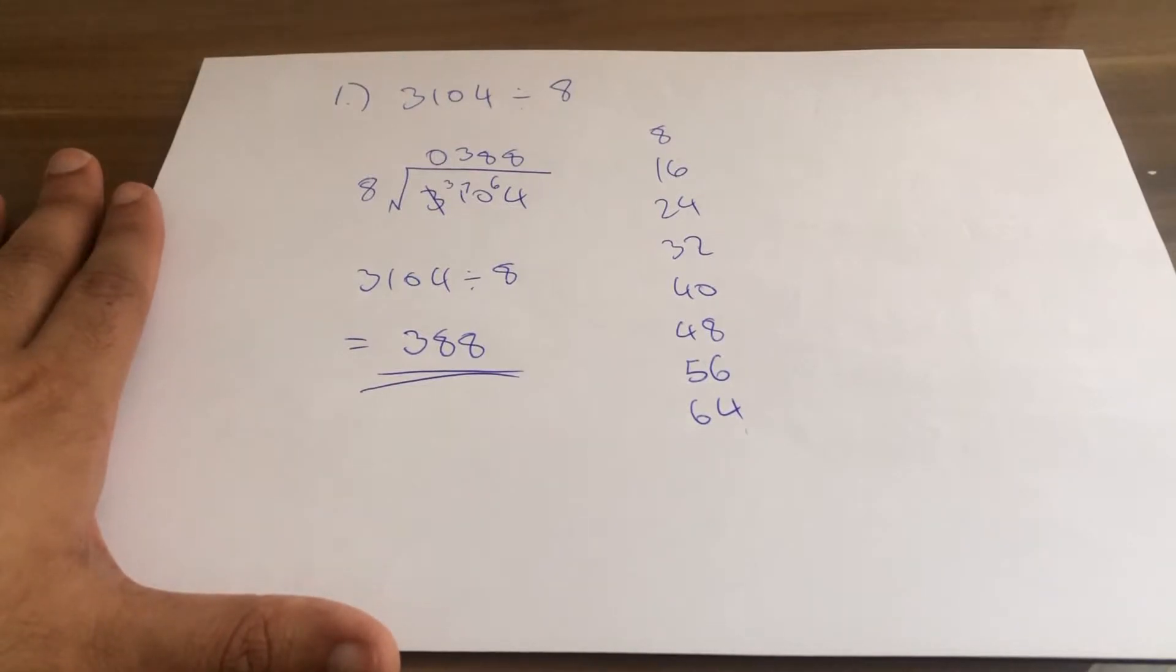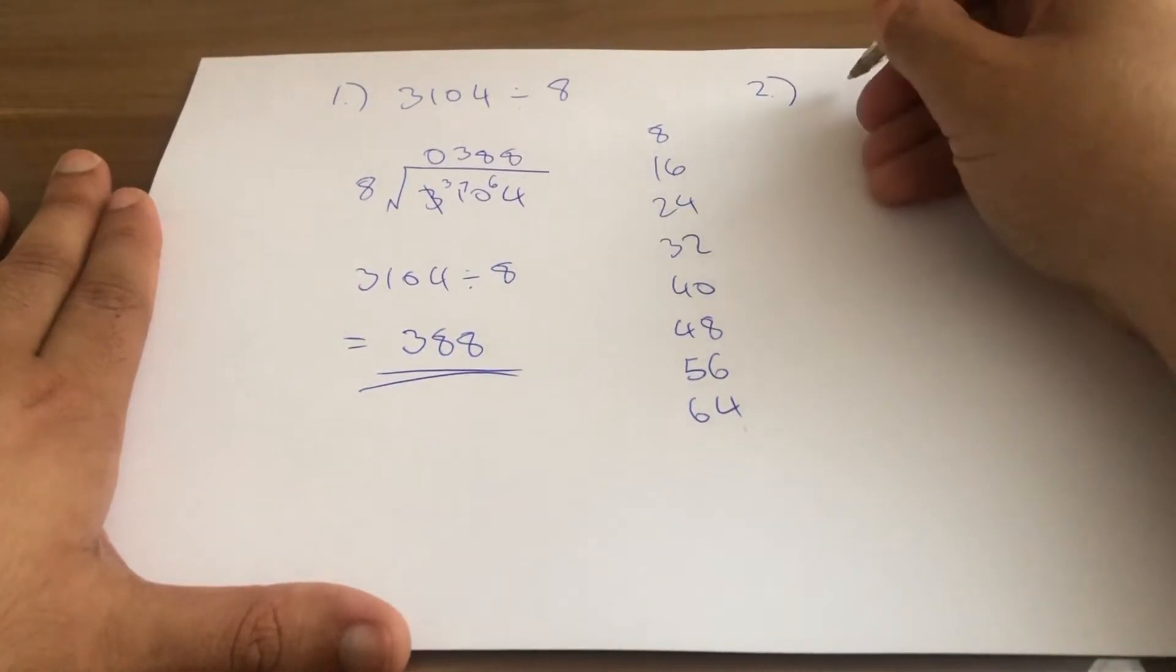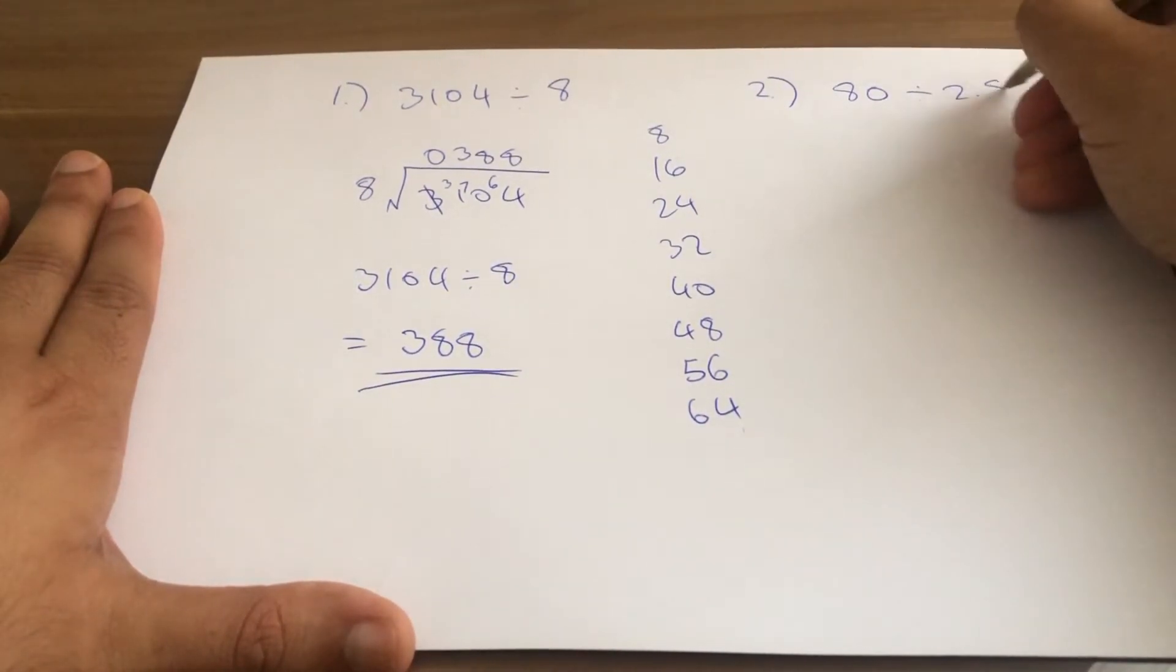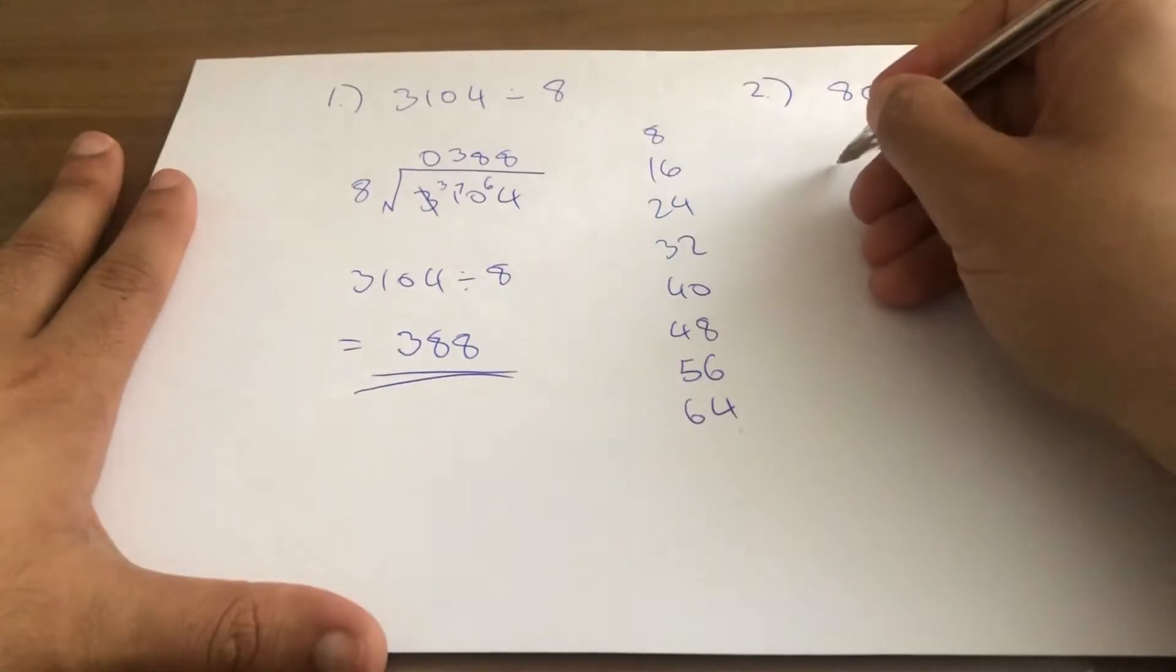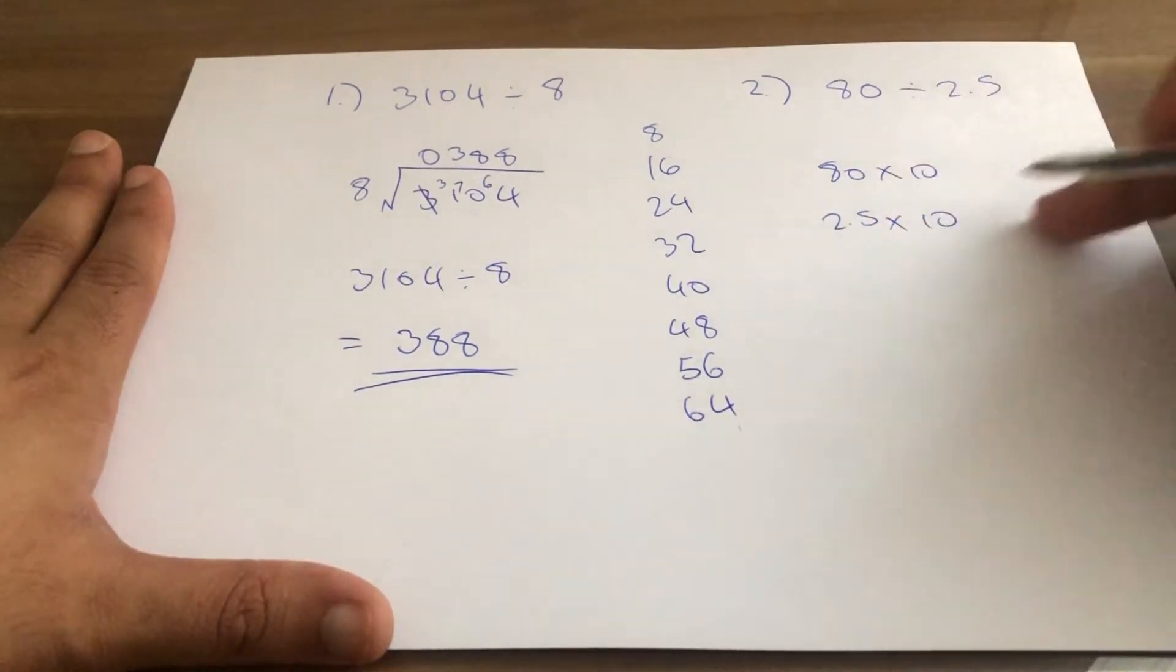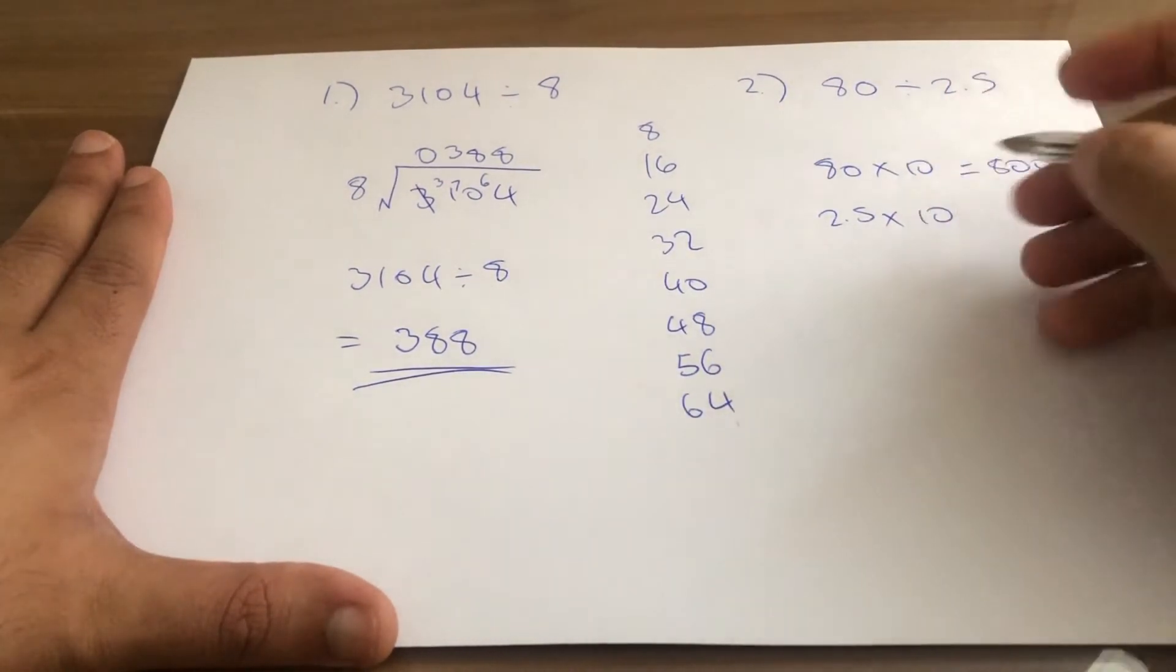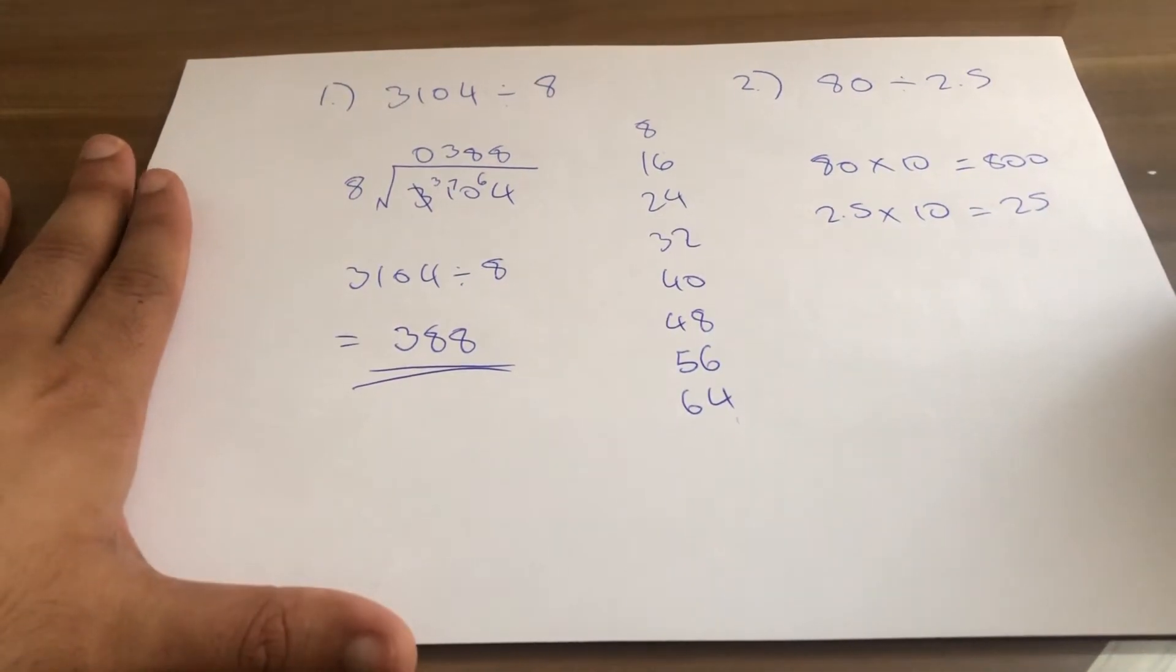Let's now look into another worked example: 280 divided by 2.5. Can we do this? What can be done in a situation like this? 80 times 10, 2.5 times 10. Let's work with whole numbers and not decimals. That gives me 800. This gives me 25. And now we have an easier way to solve the question itself.